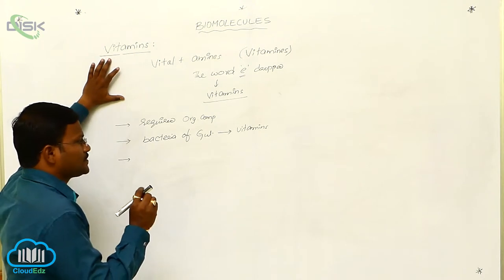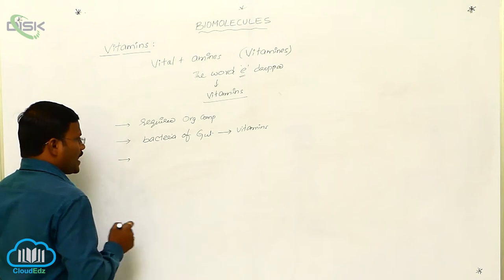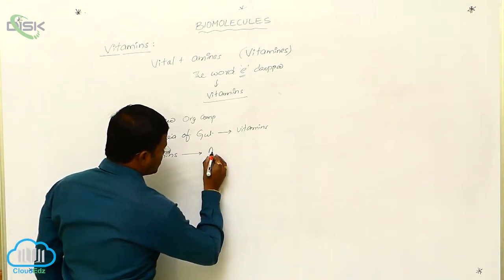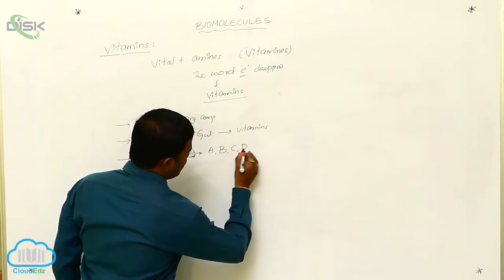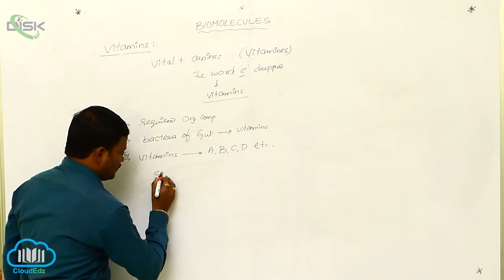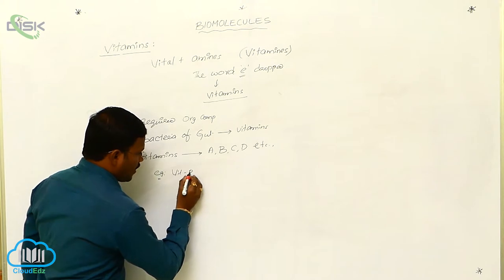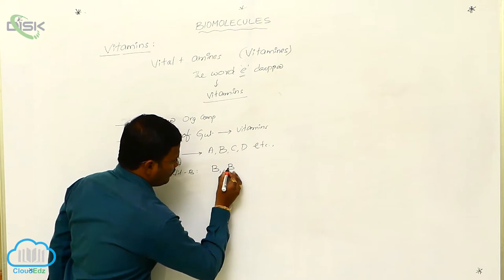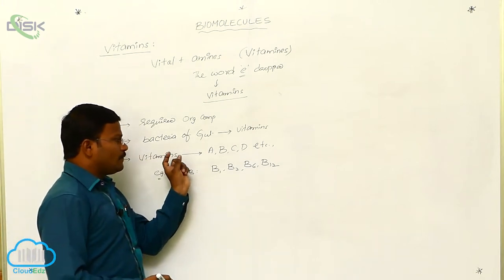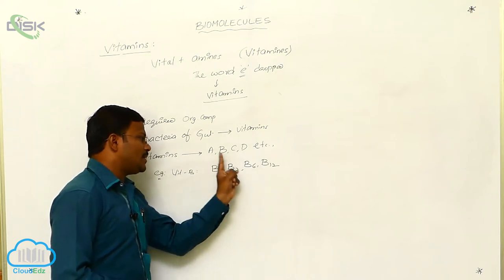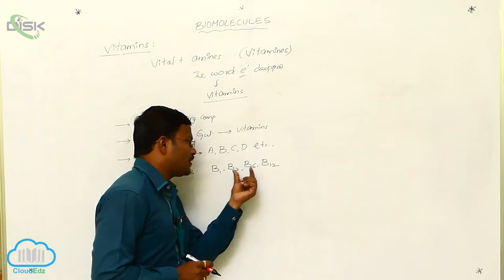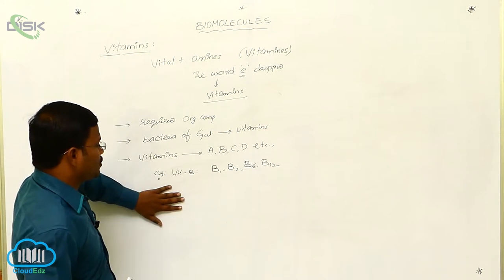Such types of chemical substances of food are called vitamins. These vitamins are denoted by alphabets A, B, C, D, etc. Out of these, some groups have subgroups. For example, vitamin B is a complex vitamin consisting of vitamin B1, vitamin B2, vitamin B6, vitamin B12, and so on. So vitamins are denoted with English alphabets A, B, C, D, with some groups having subgroups.